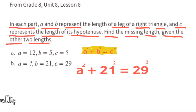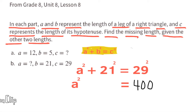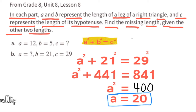For part b, we're told a squared plus 21 squared equals 29 squared. 21 squared is 441 and 29 squared is 841. Subtracting 441 from both sides gives a squared equals 400. Since the square root of 400 is 20, side length a is 20 units.